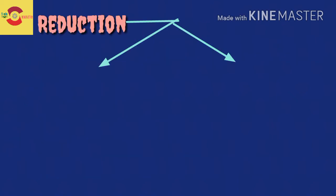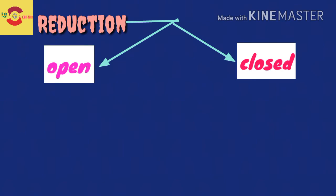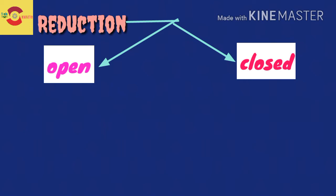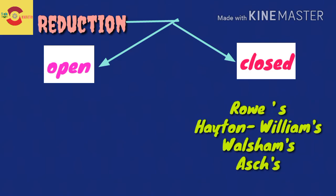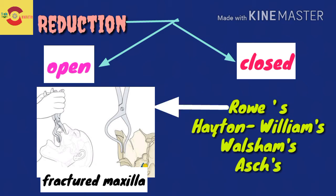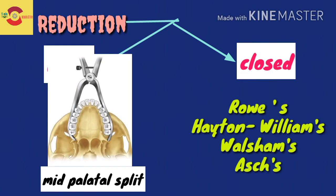Regarding reduction, it can be open or closed. Closed reduction refers to the reduction of fracture segments to their previous anatomic and functional position by manipulation without direct visualization of the fracture. Devices for closed reduction include Rowe's disimpaction forceps for the fractured maxilla, Hayton-Williams forceps for a mid-palatal split maxilla, and Walsheim's forceps for certain nasal fractures.